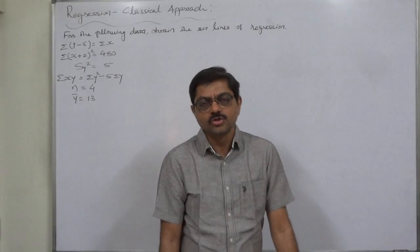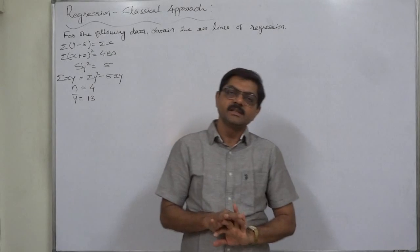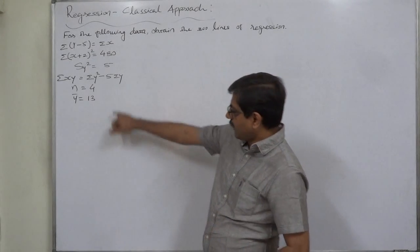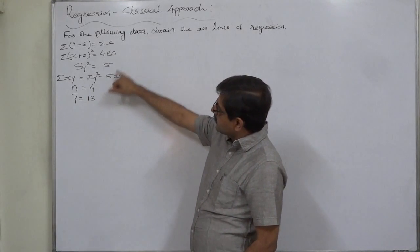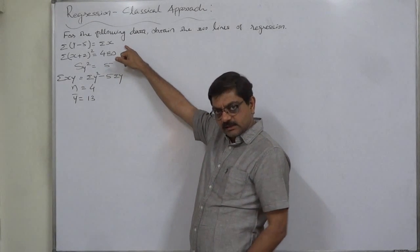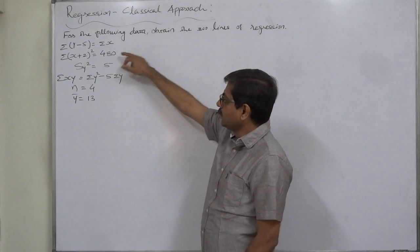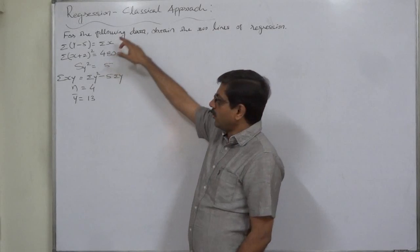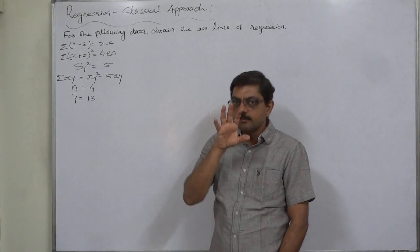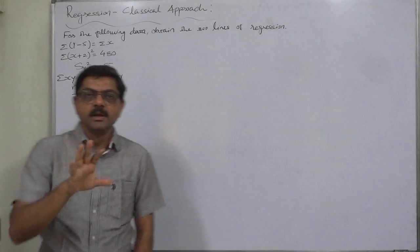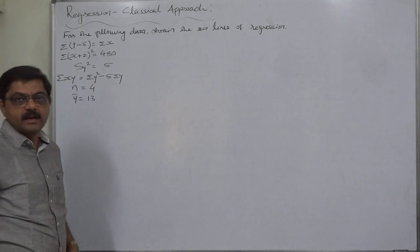We are well aware that to obtain the two lines of regression we should have four things: two regression coefficients b_yx and b_xy, and two means x̄ and ȳ. ȳ is available, but to find x̄ we need σx, and the numerical value of σx is not directly given. Not only that, to find b_yx and b_xy we need summations of variables and their squared values, which we also don't have.